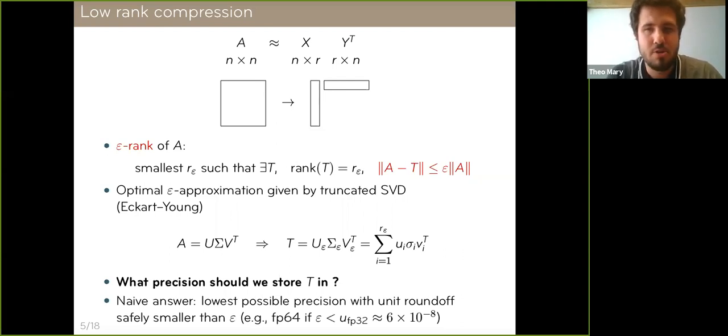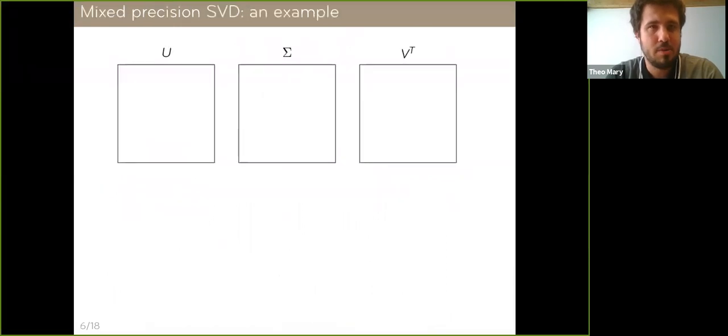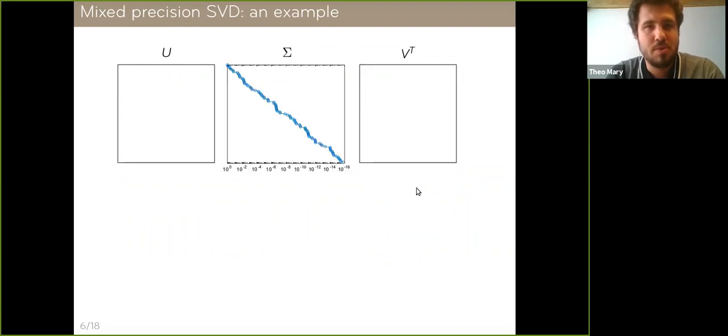There is a naive answer. We want an accuracy of at least epsilon. So we should use whatever precision is safely smaller than epsilon. For example, if epsilon is smaller than the unit roundoff of single precision, we need to use double precision. So the keyword here is naive. This is a naive answer. To explain why, let me take an example. Consider some SVD U sigma V transpose. And importantly, assume that we have a rapid decay of singular values, something like a log-linear distribution, for example. And assume that the requested accuracy epsilon equals 10 to the minus 9.